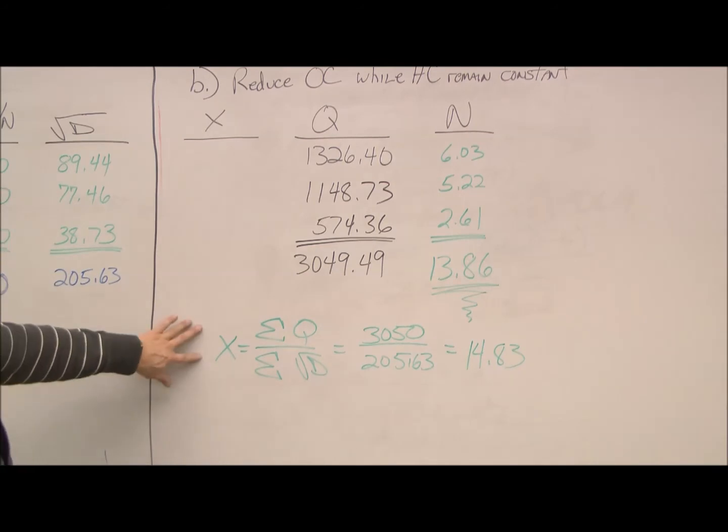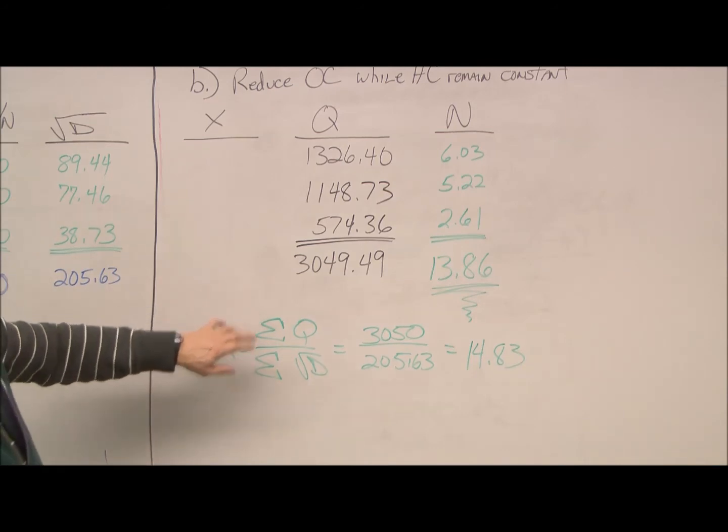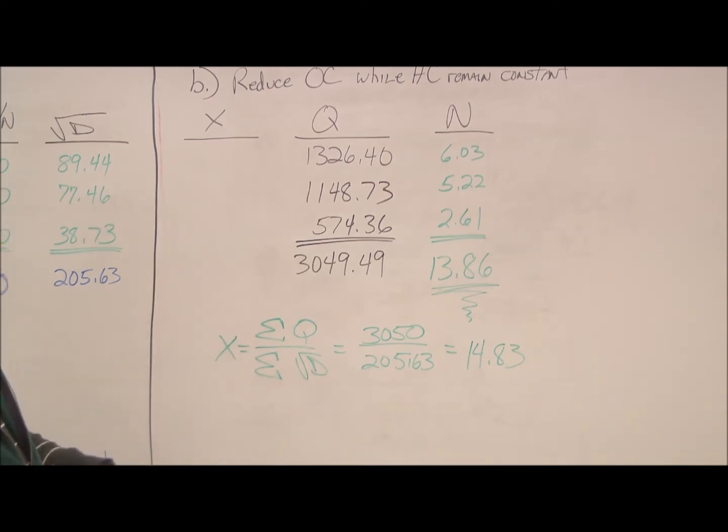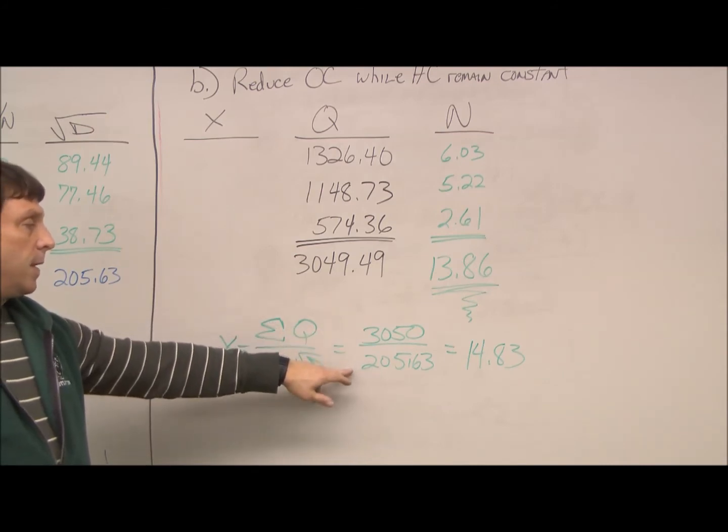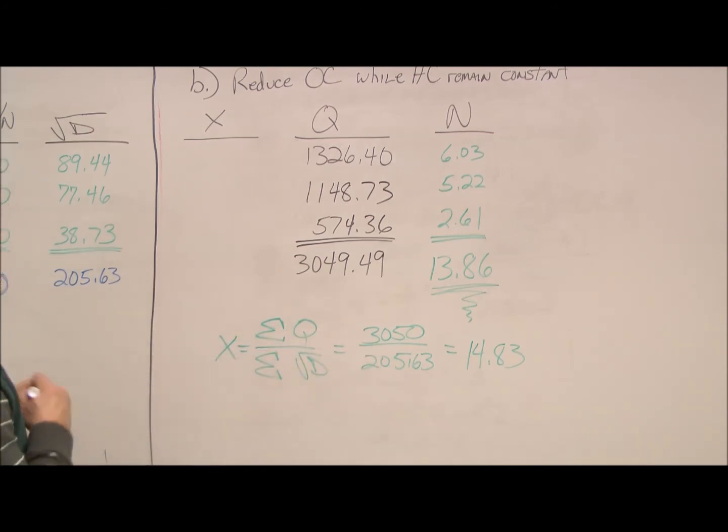We use formula 3 to figure out X this time. X is the summation of Q over the summation of square root of D. Original sum was 3050, and 205 gives us 14.8.